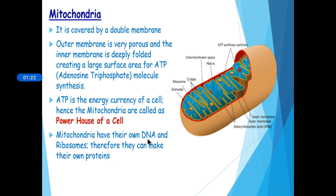One speciality of mitochondria is that they have their own DNA and ribosomes — ribosomes help in the manufacture of proteins. Important questions: name the cell organelle known as the powerhouse of the cell; what is the full form of ATP; what is known as the energy currency of a cell; and name the cell organelle that has its own DNA and ribosomes. Note: one more cell organelle also has its own DNA and ribosomes, which will be discussed next.